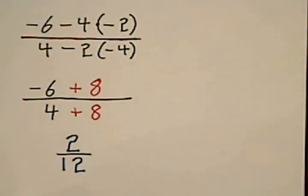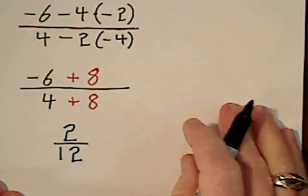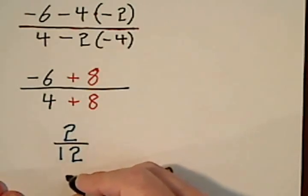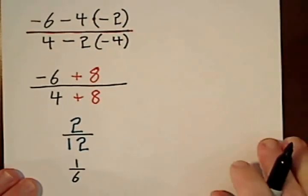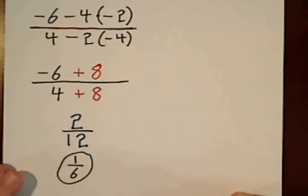And then this can be simplified, 2 twelfths. You can divide by 2, divide by 2, so you get 1 sixth. Might be coming off the screen a little.